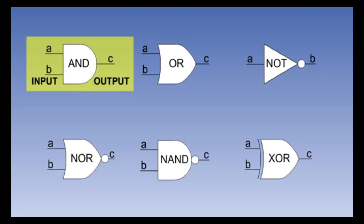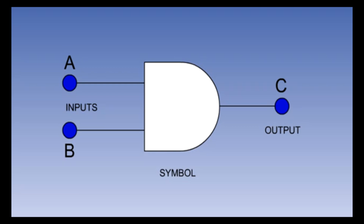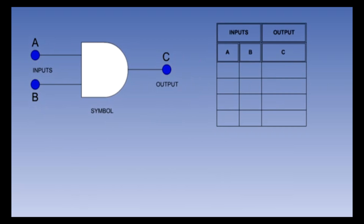We will look at each type of gate beginning with the AND gate. Shown on the screen is the symbol for an AND gate. The AND gate is used to represent a situation where all inputs to the gate must be one to produce a one output. If any input is a zero, the output will be zero. The AND gate can have two or more inputs. We can build up the truth table for this two-input AND gate by looking at all of the possible combinations of inputs and outputs.